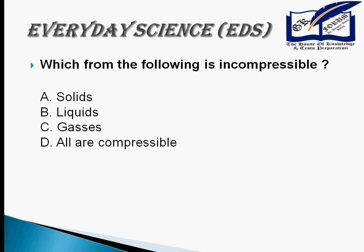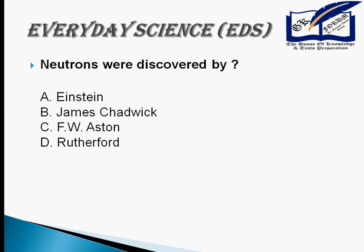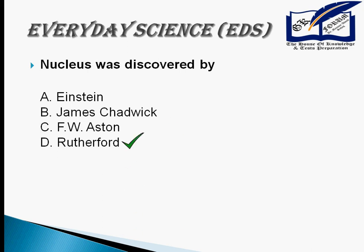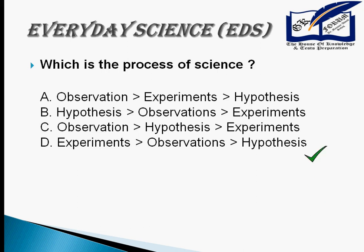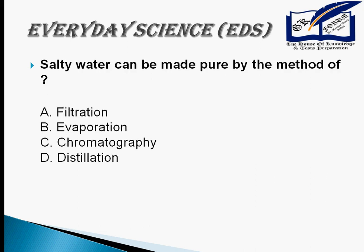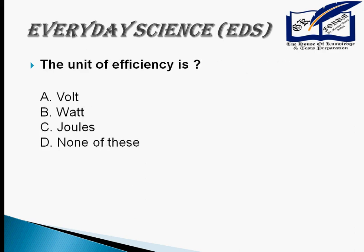Bronze is an alloy of copper and tin. Neutrons were discovered by James Chadwick. The nucleus was discovered by Rutherford. The process of science involves observation, hypothesis, and experiments. Salty water can be made pure by the method of distillation. The unit of efficiency is none of these.